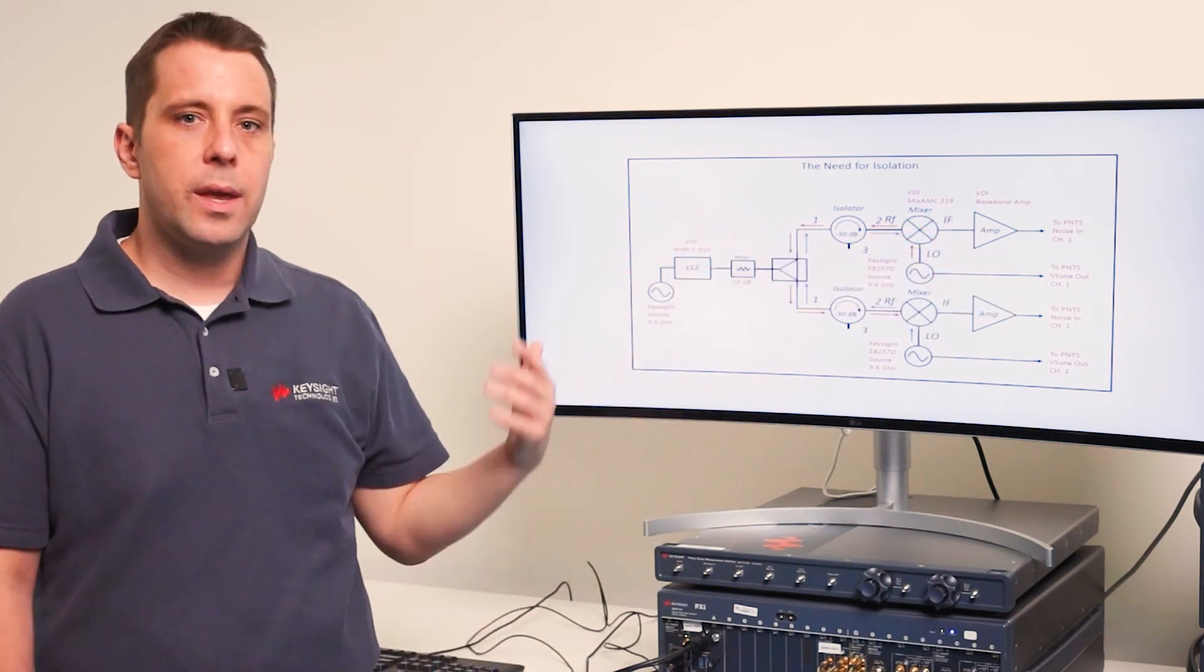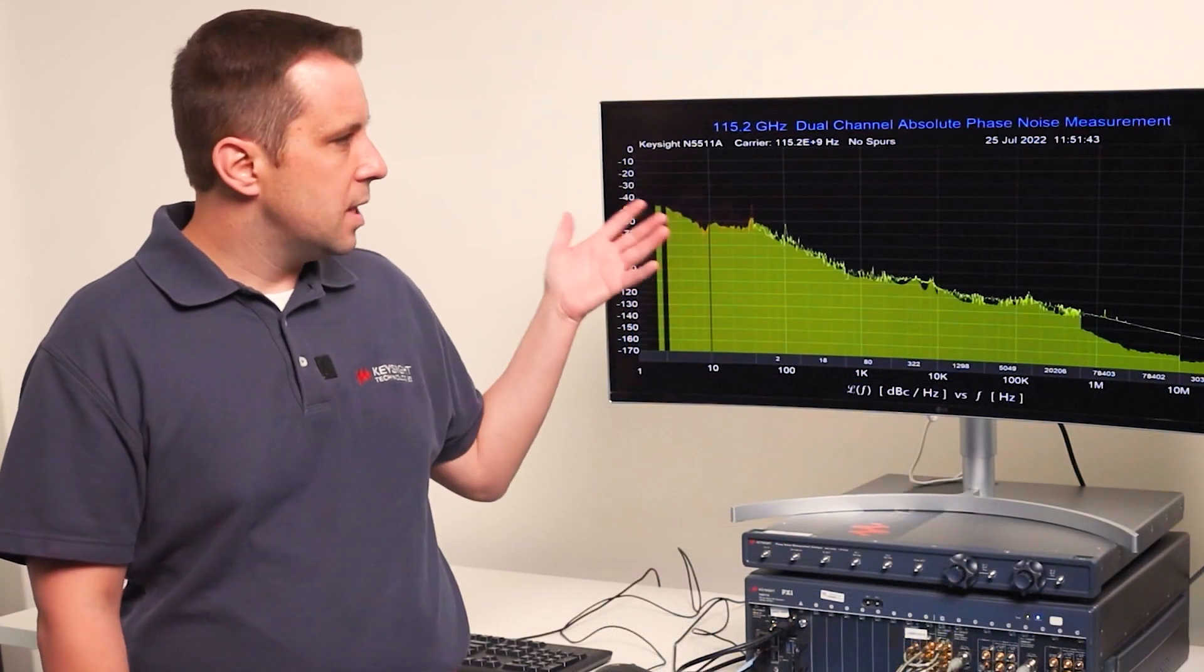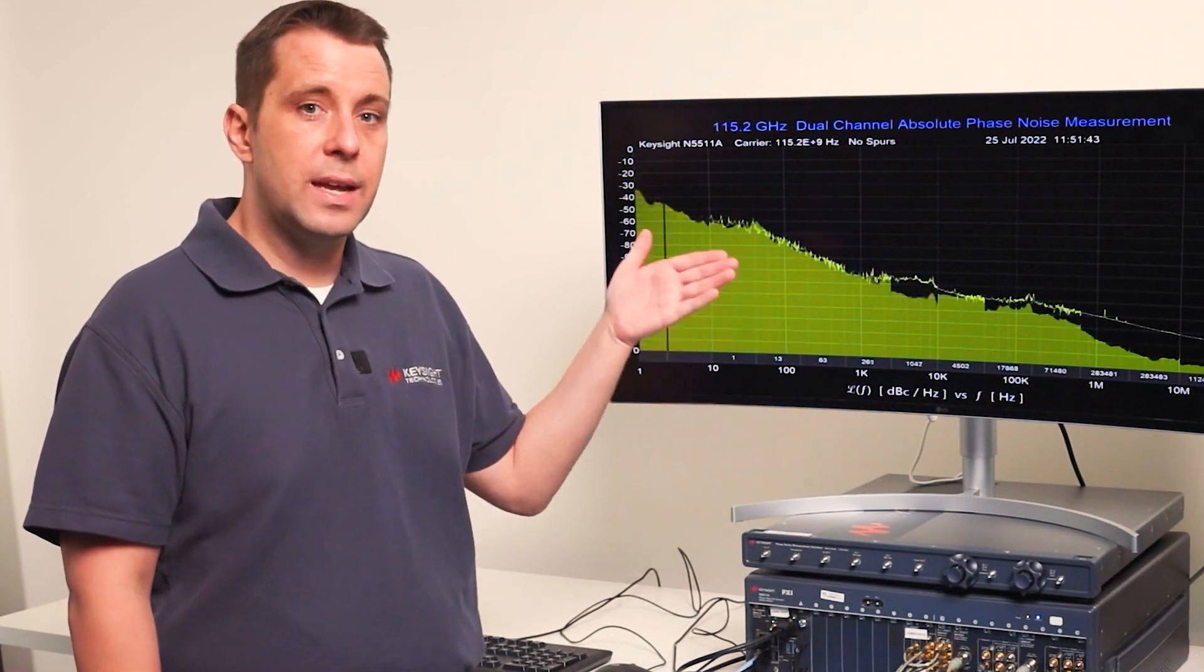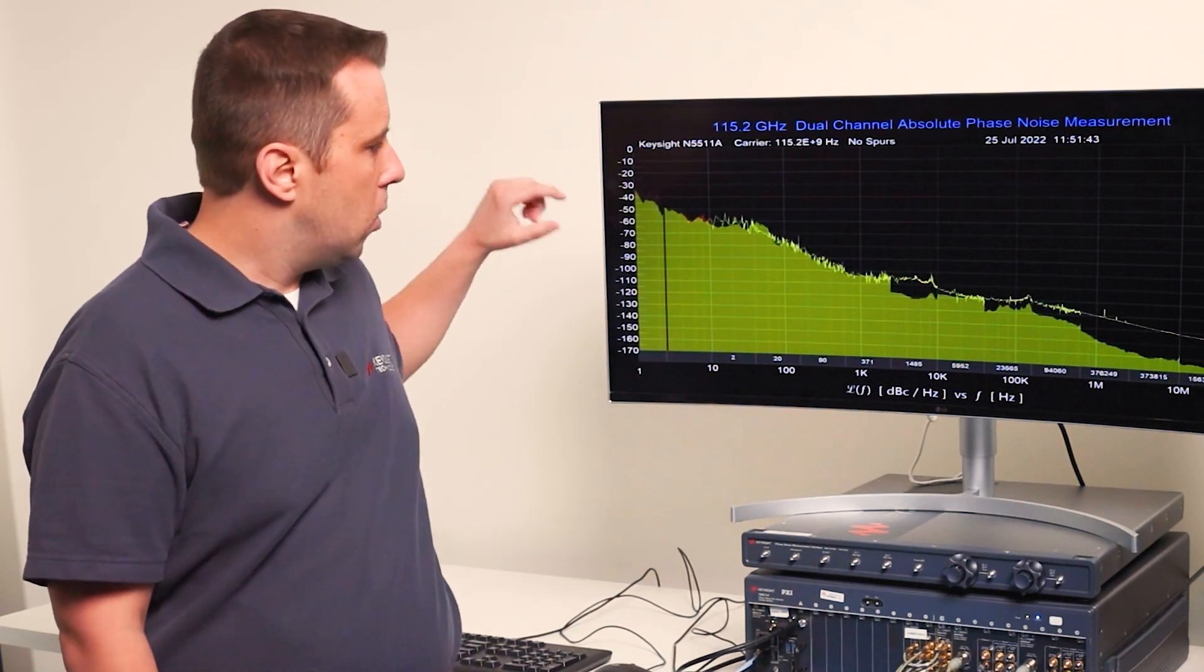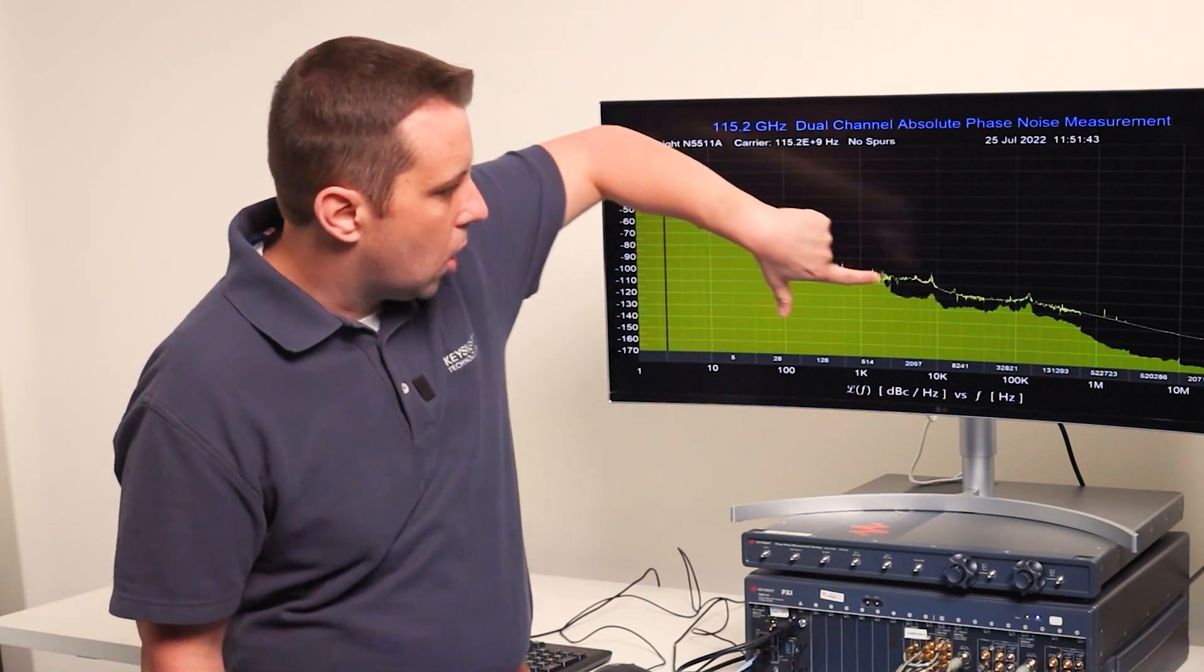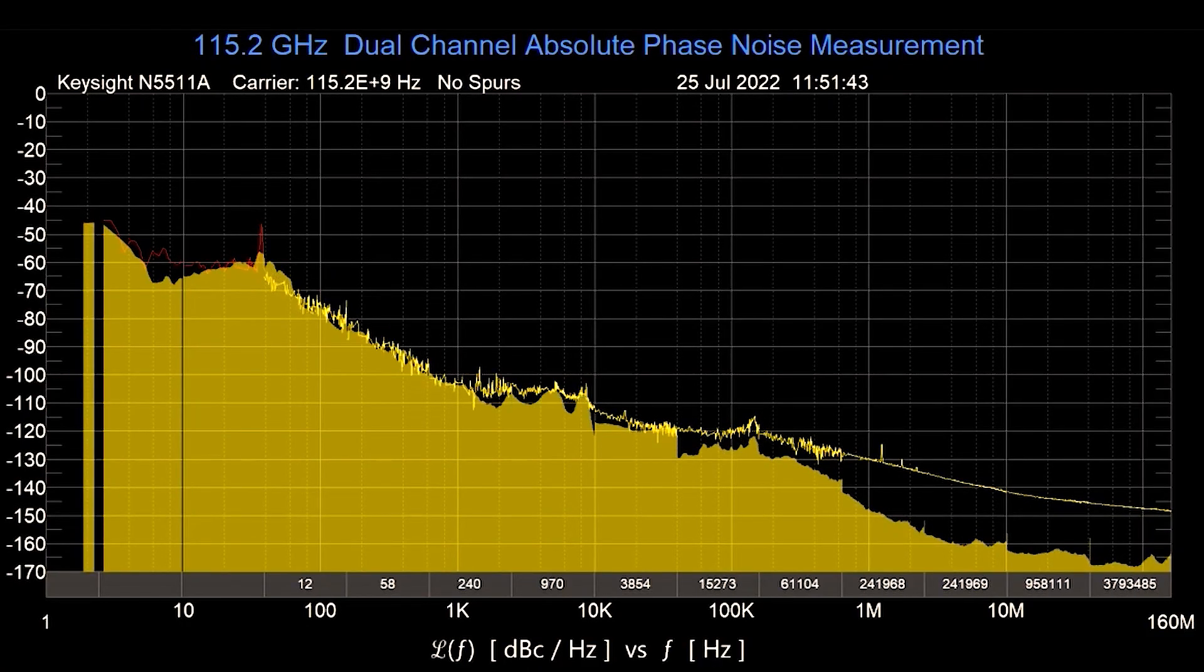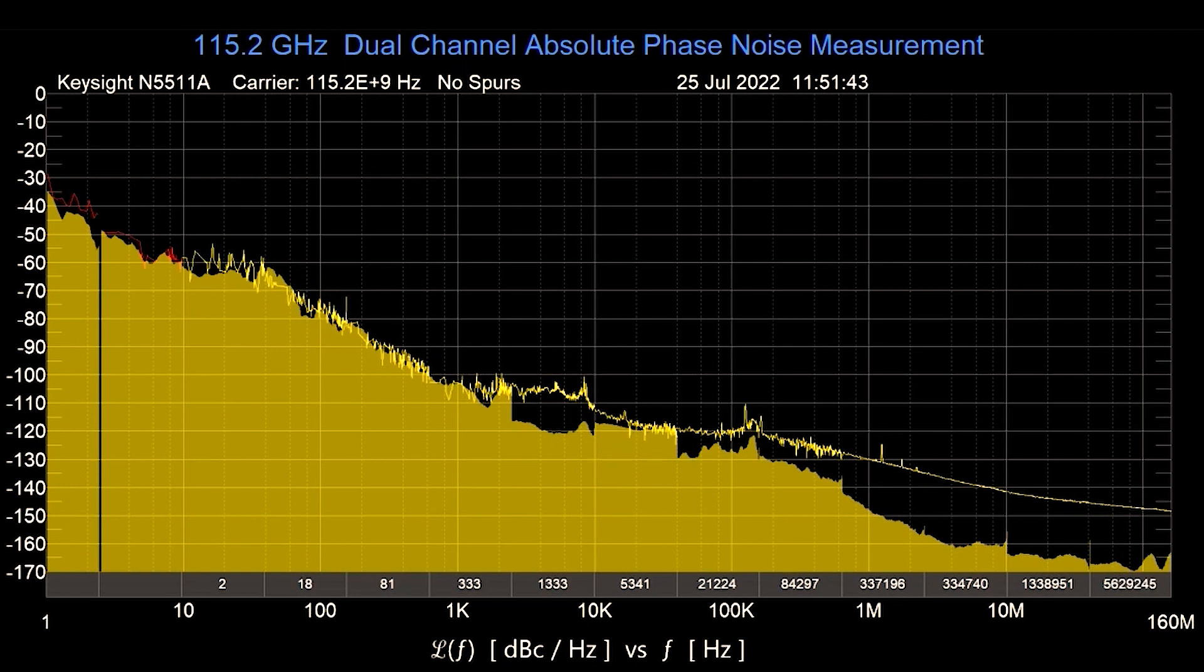Now let's take a look at an actual measurement. As you can see this is the N5510 software running on the N5511 phase noise test system. The phase noise trace is this solid yellow line here. And then below that you'll see a more transparent yellow trace that's kind of a shaded area.